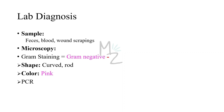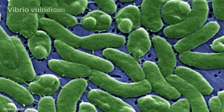Lab diagnosis will need samples of feces, blood, and wound scrapings. Then we go for microscopy — on gram staining this bacterium comes out gram-negative: curved, rod-shaped, and pink-colored. Other tests include PCR — polymerase chain reaction. Under the microscope Vibrio vulnificus appears as a rod-shaped, curved bacterium.